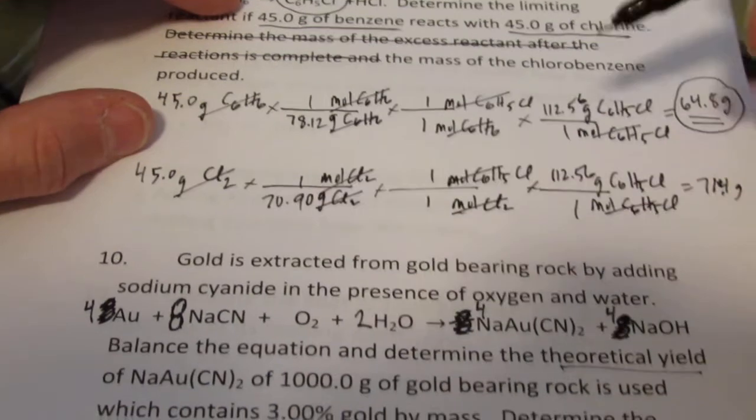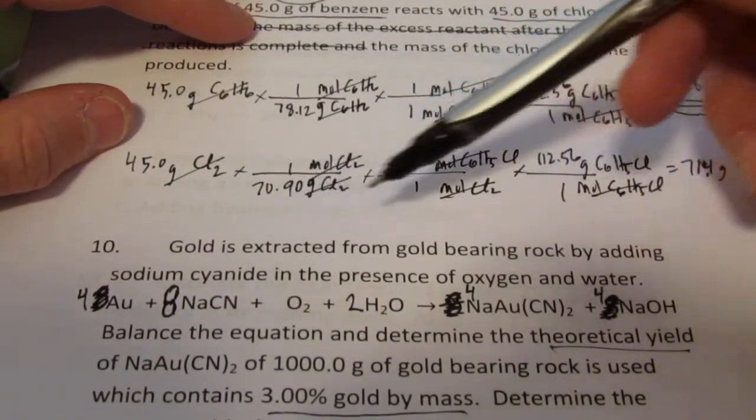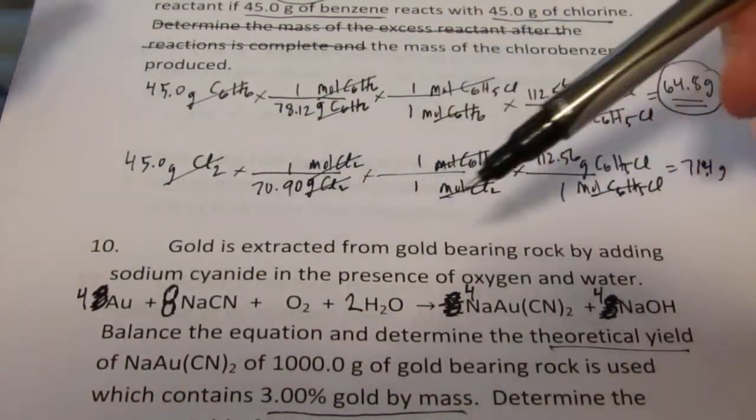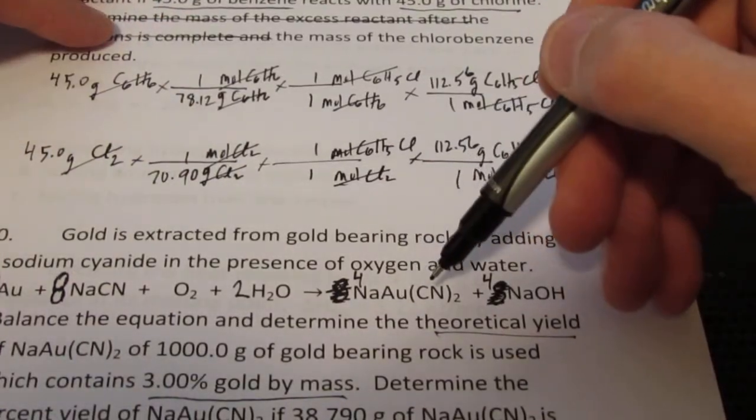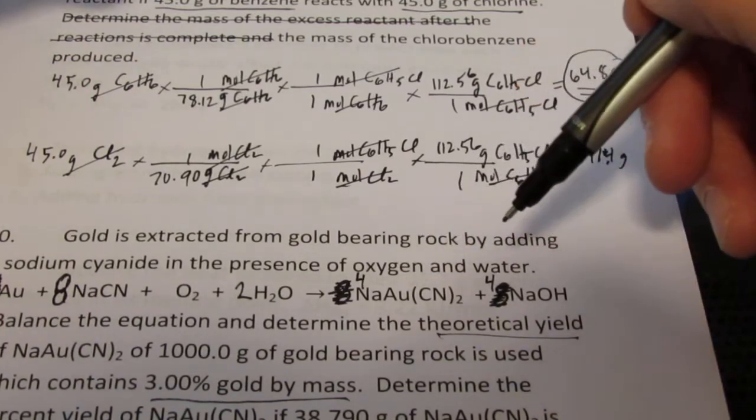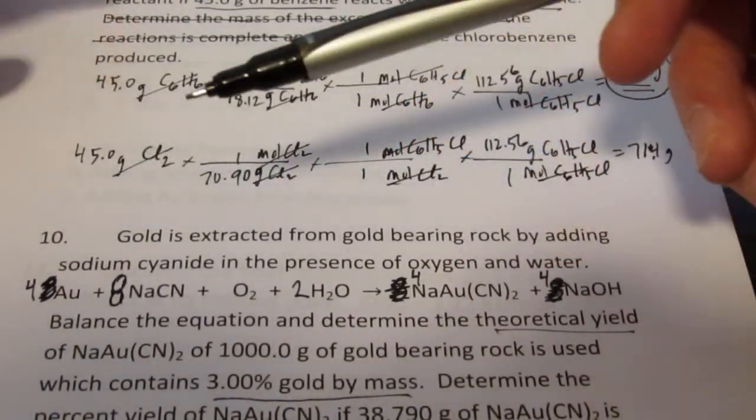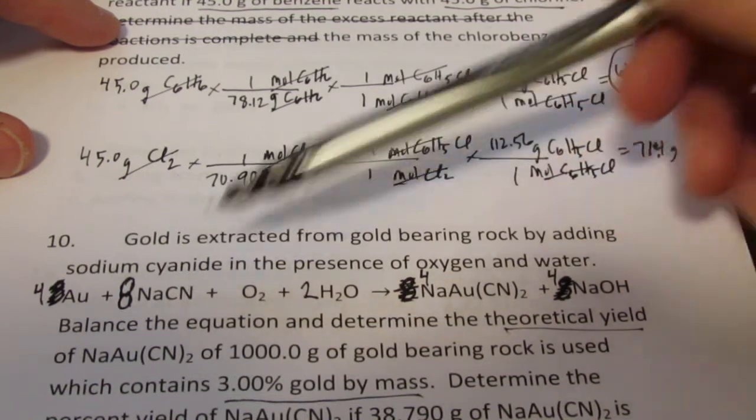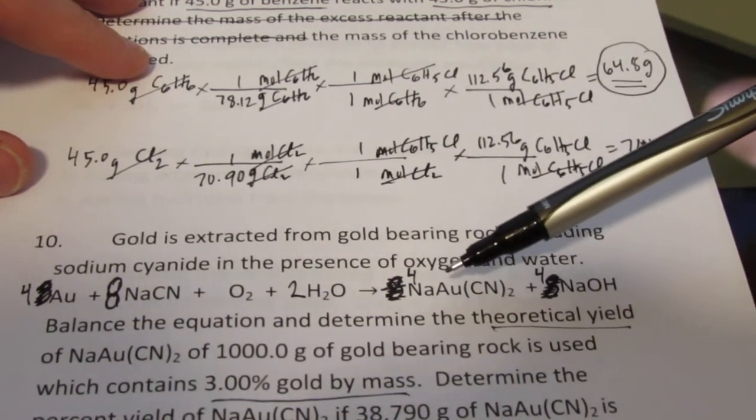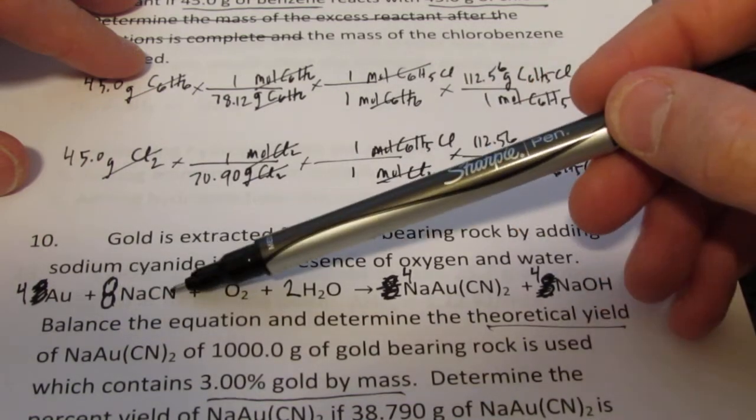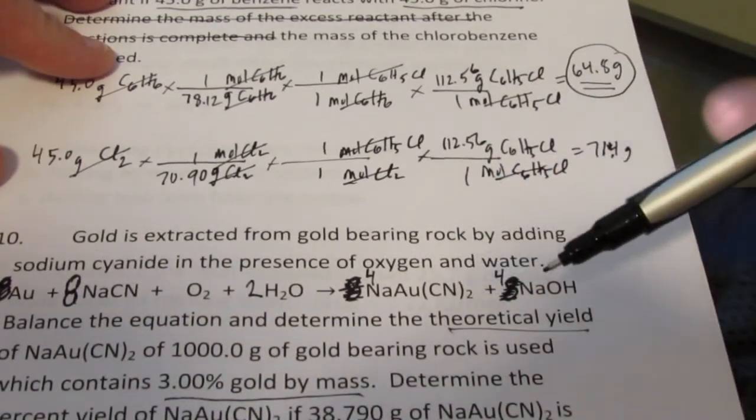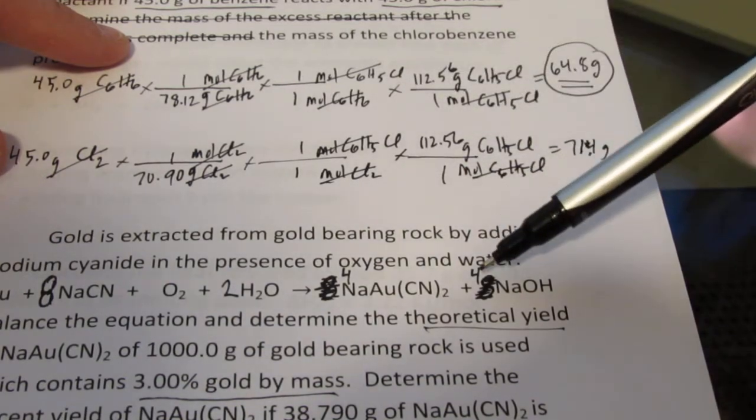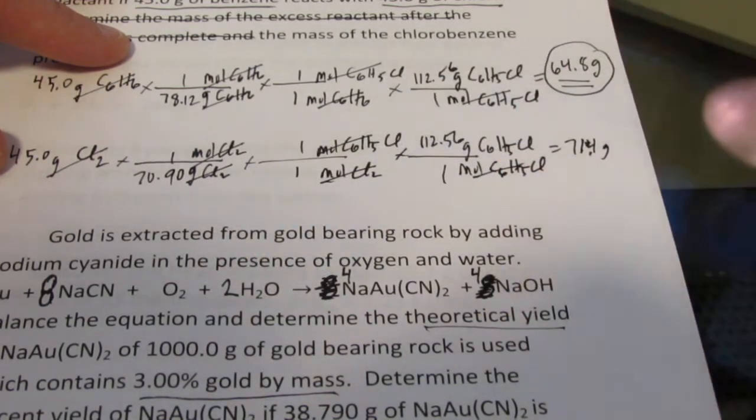All right, number 10. Number 10 is sort of fun because it was interesting to balance. It's how we extract gold from gold-bearing rock. They use a cyanide to do that. It forms a gold-cyano complex, which dissolves in water, which then we can extract the gold from quite easily. To balance this equation, it was really quite difficult. We have 4 in front of gold, 8 in front of sodium cyanide. That means I had to have 8 sodium, 4 here and 4 there. That gave me 8 cyanides. 4 times 2 is 8 cyanides. Then I ended up with 4 hydrogens, so I put a 2 in front of H₂O to give me 4 hydrogens. That gave me 4 oxygens. 2 plus 2 is 4. And it's balanced.